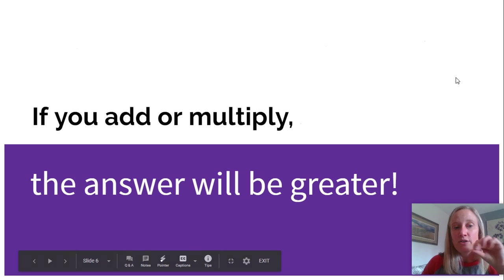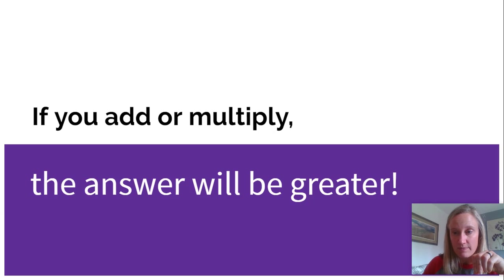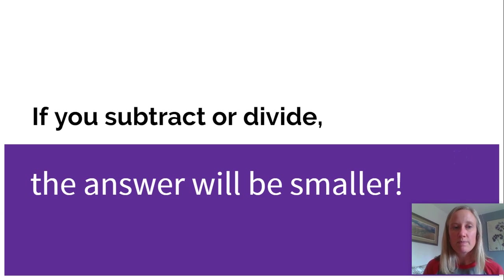Now, if you add or multiply, either one of those, the answer will be greater. So if you add two numbers, your answer is going to be a bigger number. If you multiply two numbers, your answer is going to be a bigger number. However, if you subtract or divide, the answer will be smaller. So if you subtract two numbers, your answer is going to be a smaller number. If you divide two numbers, your answer is going to be a smaller number than whatever the first number was.